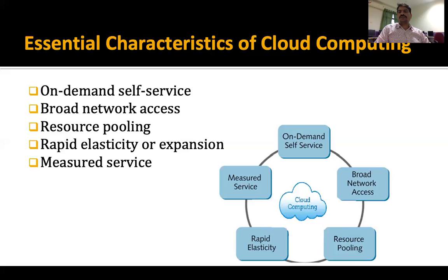Second is broad network access. If you are a cloud service provider, you should have a very good network service and very good internet bandwidth. If you don't have sufficient bandwidth, you will be degrading revenue — people will not join your cloud because joining it takes too long due to less bandwidth. So every cloud service provider will have a good amount of bandwidth; good broad network access will be available in the cloud infrastructure. This is the second essential characteristic of cloud computing.